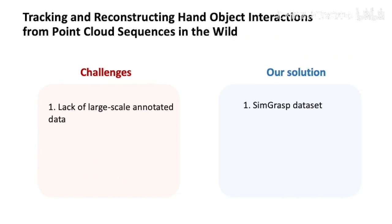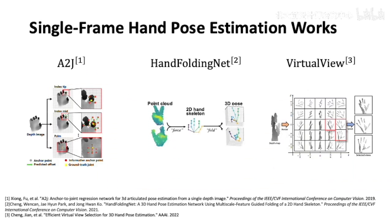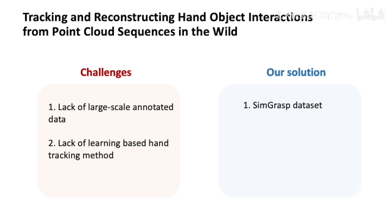In addition to the data challenges, learning-based hand-tracking methods are extremely underexplored. Previous learning-based works mainly focus on single-frame hand-pose estimation, which can't guarantee temporal pose coherence and suffers from large ambiguities under heavy occlusions in hand-object interactions. Our work, for the first time, proposes a point-cloud-based hand-pose tracking network, namely HandTrackNet.